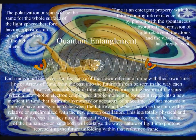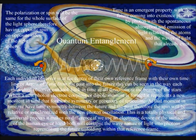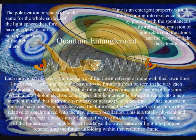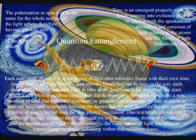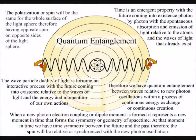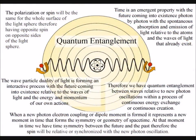In quantum mechanics, this process is represented by the quantum wave particle function expanding out as an inverse sphere. An intuitive way of thinking of an inverse sphere is that the energy source, or even the observer, is within the sphere looking out. In this theory, the polarisation or spin will be the same for the whole surface of the light sphere, therefore having opposite spin on opposite sides of the light sphere.